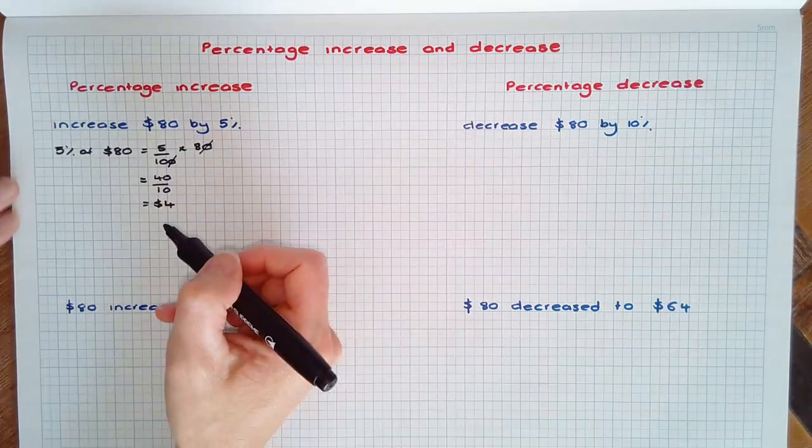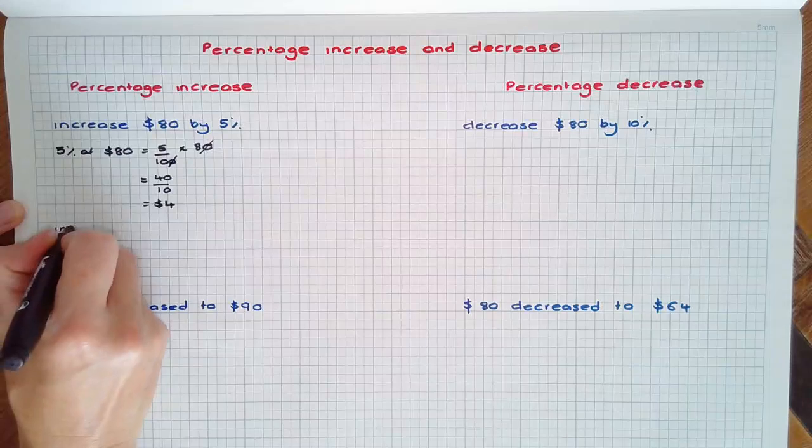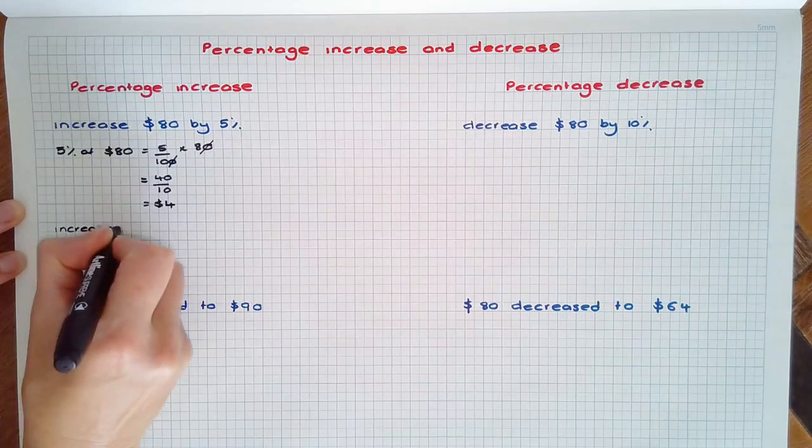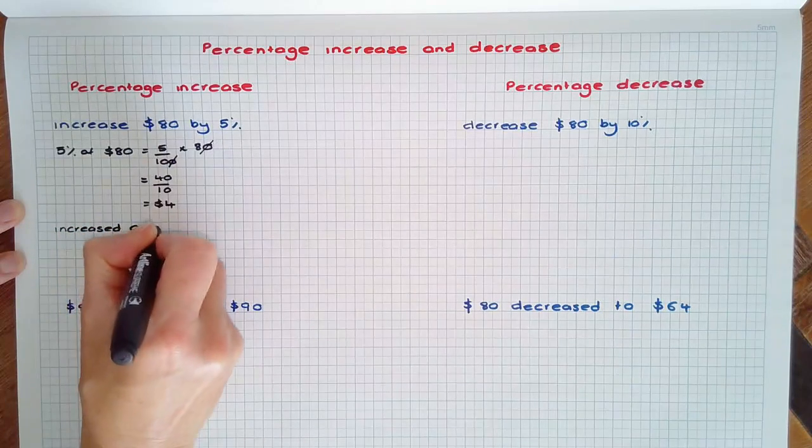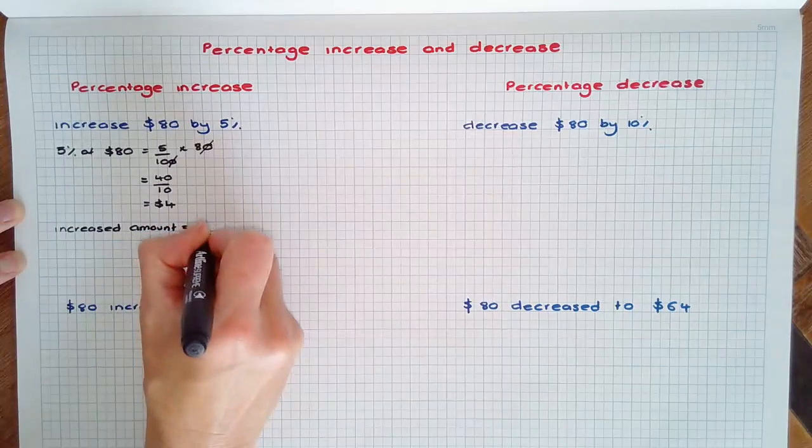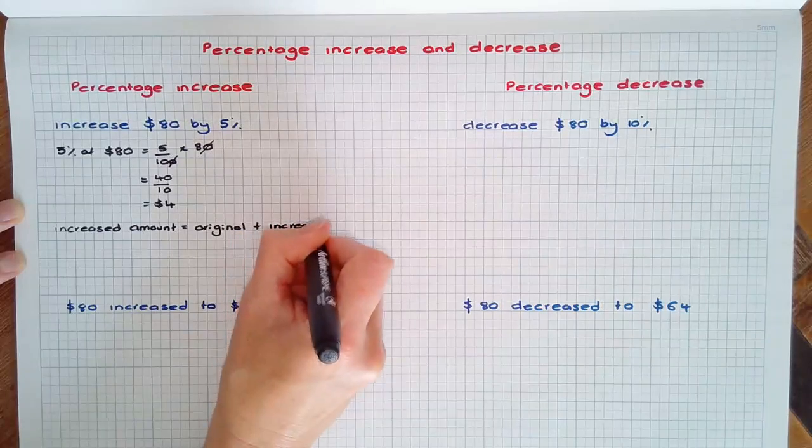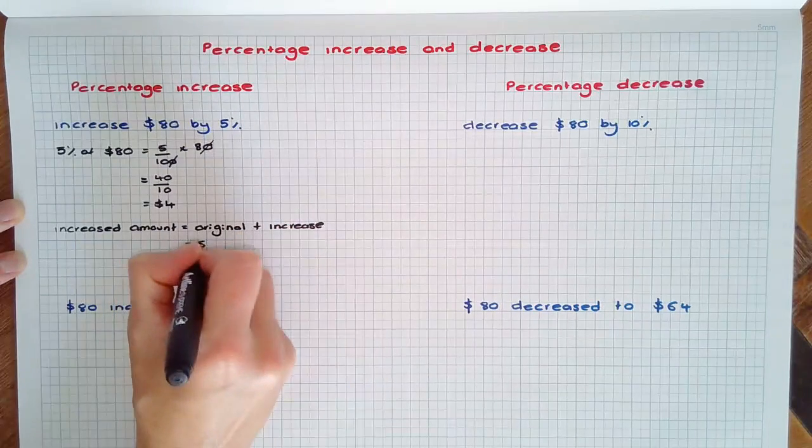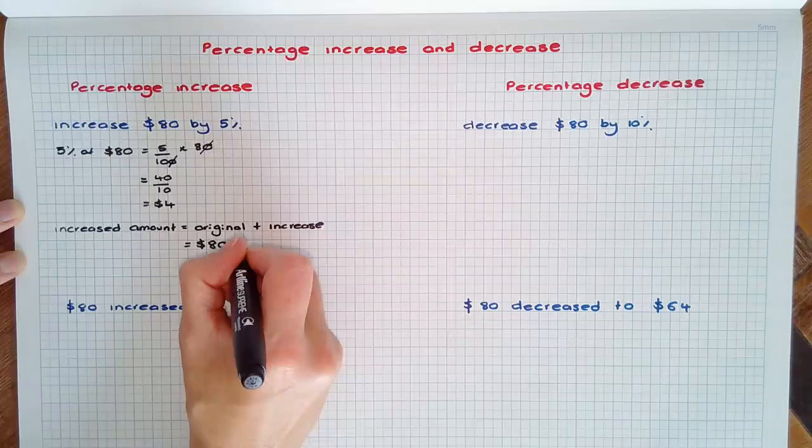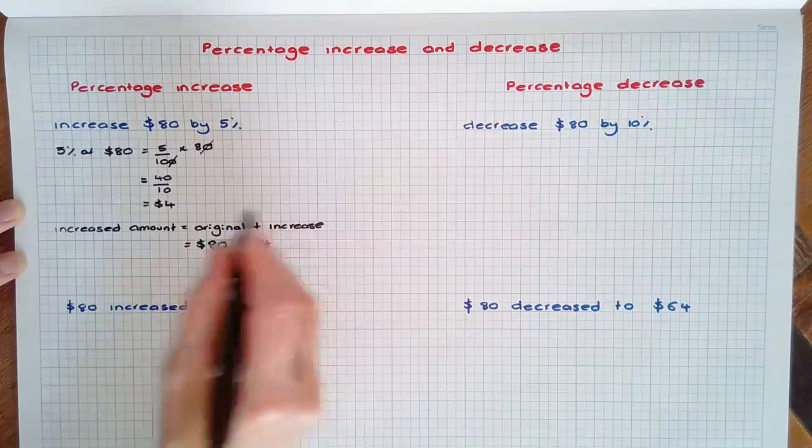So the increase is $4, but the increased amount equals the original amount plus the increase, which in this case was $80 plus the $4 increase, being $84.